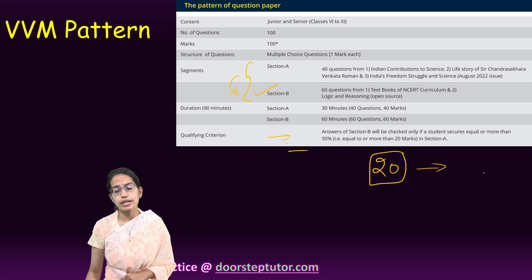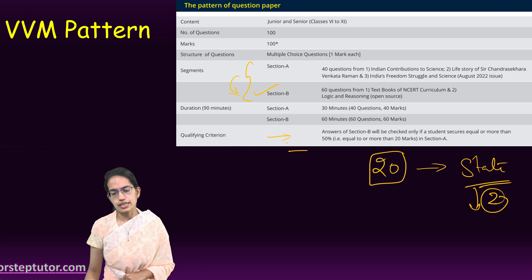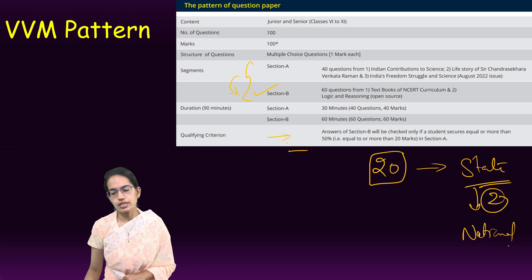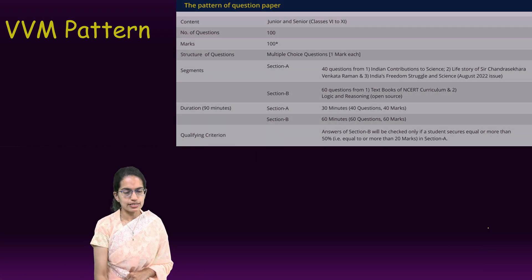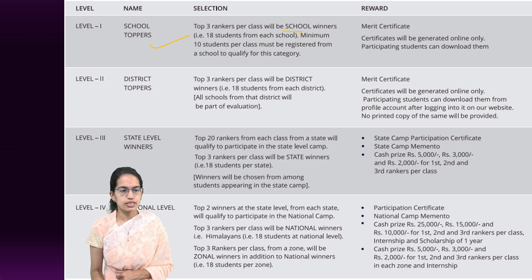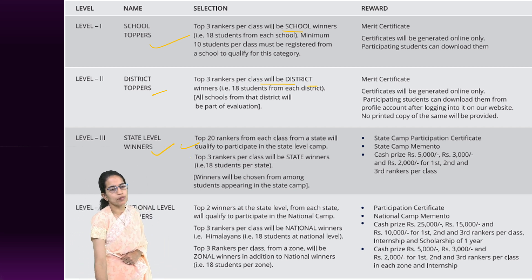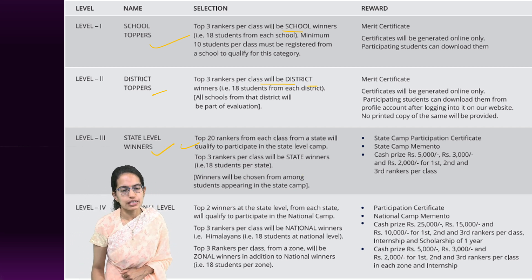Of the total students who appear, 20 students from each class qualify for the state level. From the state, two toppers are selected to participate at the national level. At the first level, the top three rankers per school receive a certificate, and the top three rankers per class receive a district certificate.